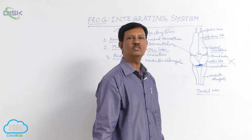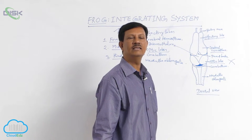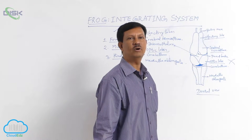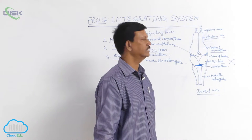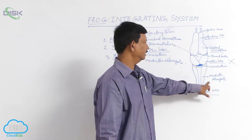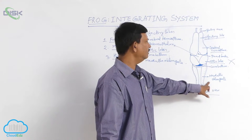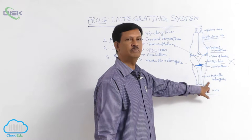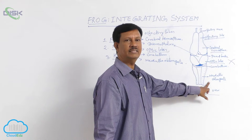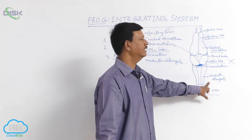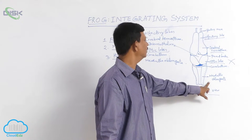It controls the involuntary functions of the body. Without the medulla oblongata, functions like heartbeat, respiration, and digestion — these important functions — cannot be performed.